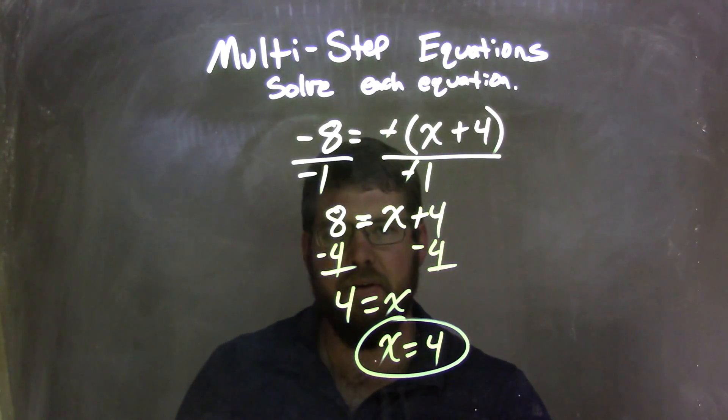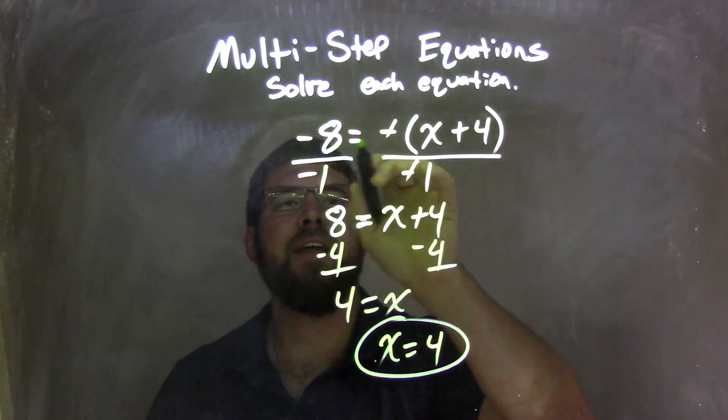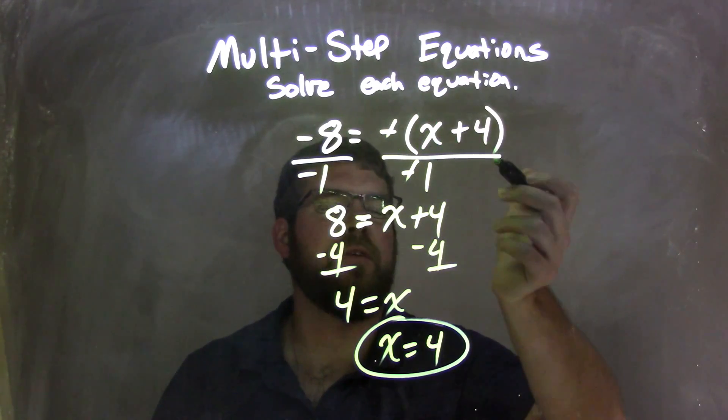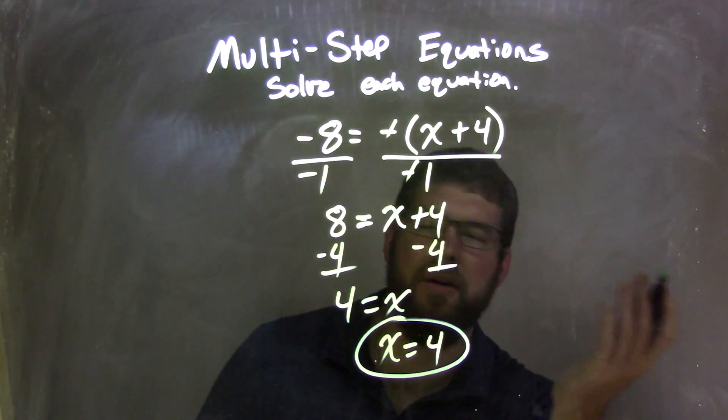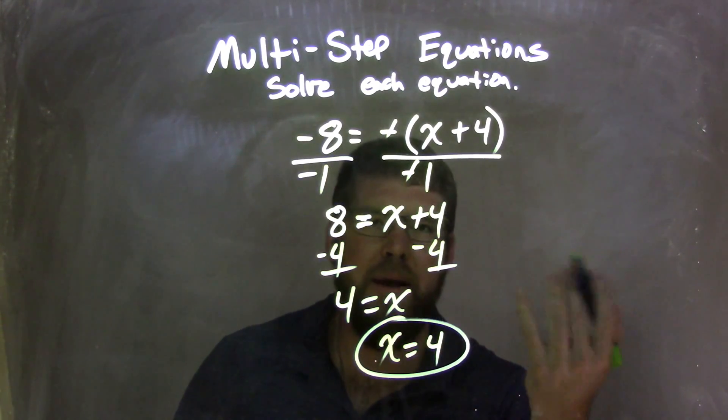So let's recap here. That was pretty quick. Negative 8 equals negative, parentheses, x plus 4. To get rid of that negative, I just divided both sides by negative 1. You actually also could have multiplied both sides by negative 1, but I divided by negative 1.